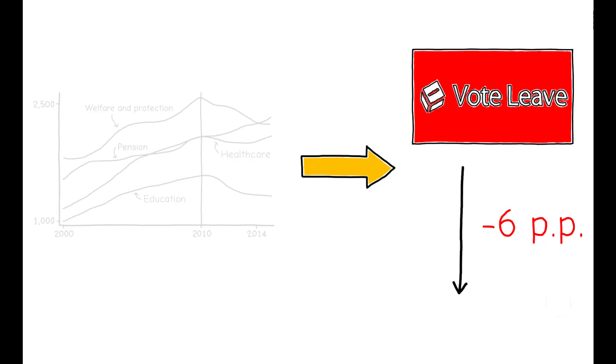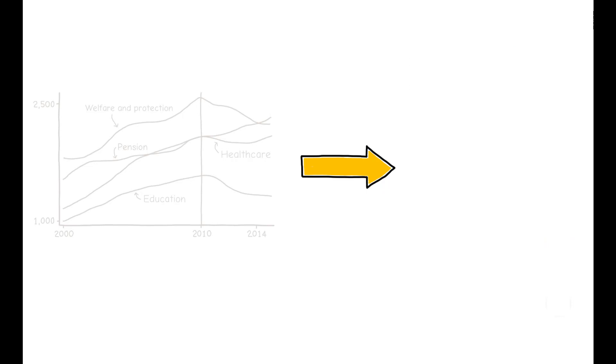Given that Leave only won by a slim margin of 3.8 percentage points, and that support for UKIP is likely to understate the overall impact that austerity had on Leave sentiment, the author concludes that without austerity, Remain would likely have won the EU referendum.